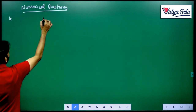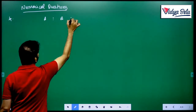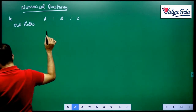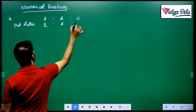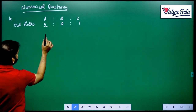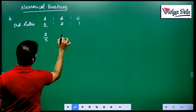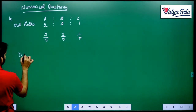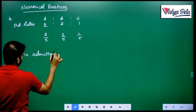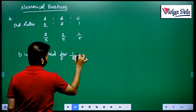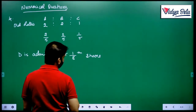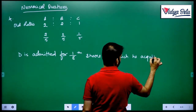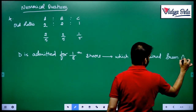Question number 4: A is to B is to C, the ratio is given as 2 to 2 to 1, which is 2/5, 2/5, and 1/5. Who is admitted? D is admitted for 1/8 share which he acquired from A.